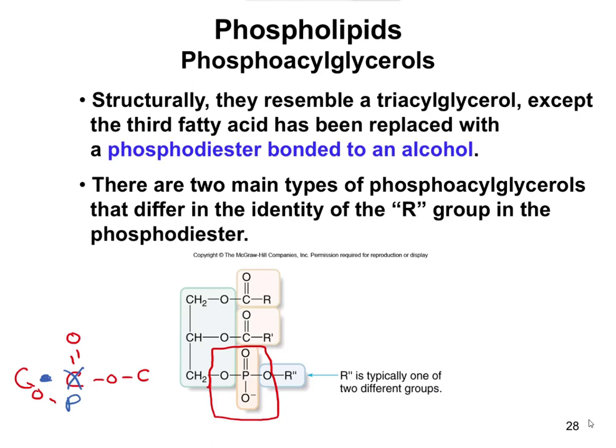Basically, you have a P double bonded to O, with O's going on either side. If you think of it as a phosphate — a phosphate is PO4 3-, the polyatomic ion phosphate. Here's the PO4, and the only thing that is different is the charge. There's only a negative one charge here because two of the other charges would have been on these other oxygens, but they don't have negative charges because those extra electrons are used in the formation of the bonds that connect it to the rest of the molecule.